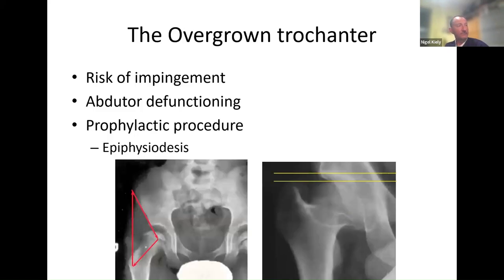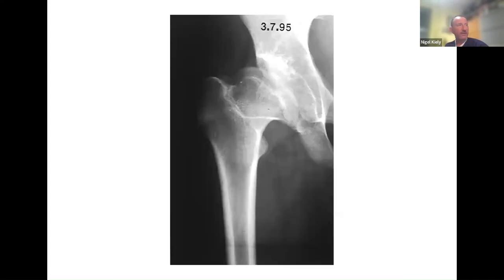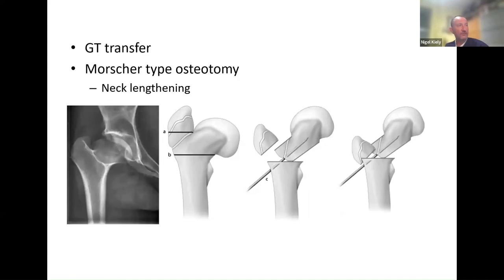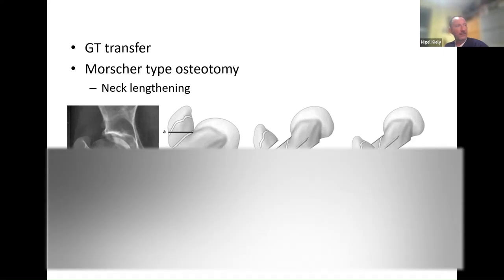Some people end up with a hip where the neck hasn't grown well and the trochanter is riding very high, which can cause pain, impingement, and the muscles working very hard around the hip. We can do an operation — a trochanteric reconstruction — to try to restore the shape of the hip. It's a complex operation not done very often, but it is sometimes an option. There are also options for hip preservation or open operations on hips in younger adults to try to reshape the hip, though this is not suitable for all cases depending on how Perthes has affected the hip.